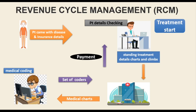The insurance officer sends detailed charts and claims to the hospital, which go to the medical coder. The coder assigns the codes and sends it back to the hospital, where the payable amount is created and client submissions happen. Then the patient pays to the insurance company. This is the revenue cycle management process.